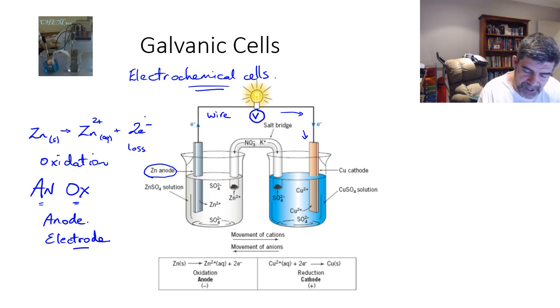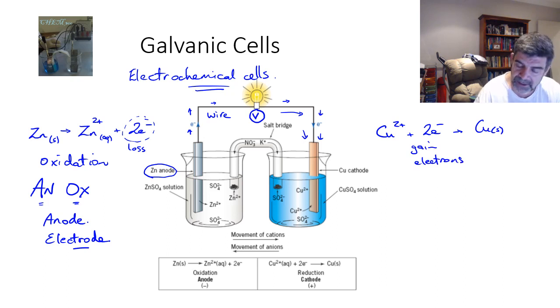Electrons that are being lost from the zinc are actually flowing through this wire towards the copper electrode. At the copper electrode, copper ions in solution are taking in those electrons and forming copper solid. This is electron gain. Gain of electrons. When electrons are gained, we have an example of reduction.